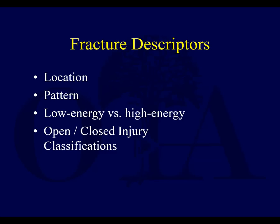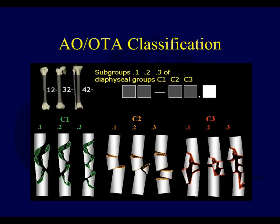Let's briefly talk about some fracture classifications. You can certainly just use fracture descriptors: look at the location, pattern, low energy versus high energy. These are common descriptors we use when discussing fractures amongst surgeons, whether it's open or closed. Here's the AO/OTA classification — the humerus would be bone number one. The fracture can be subclassified as A, B, or C; the C's are the more comminuted fractures, breaking down to C1.1 for instance. The humeral diaphysis would be fracture number 12 — one for humerus, two for middle third.